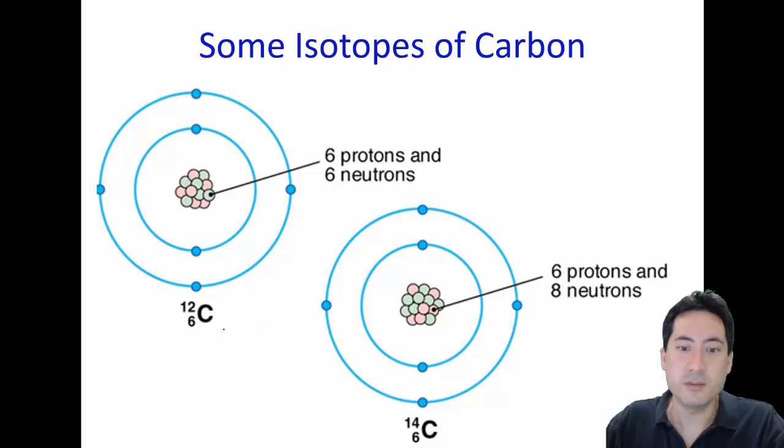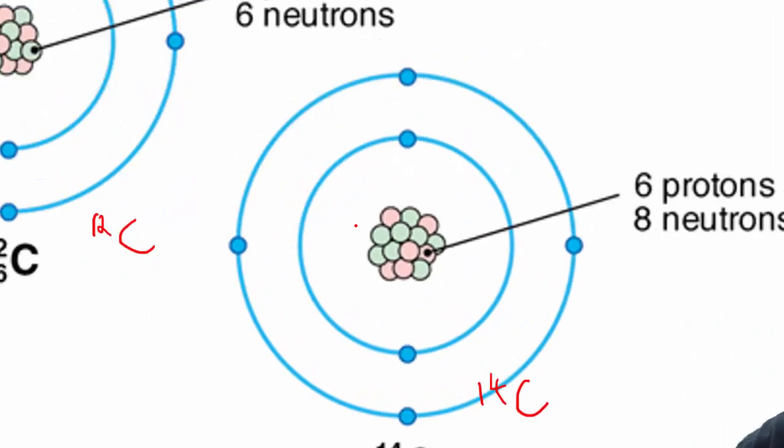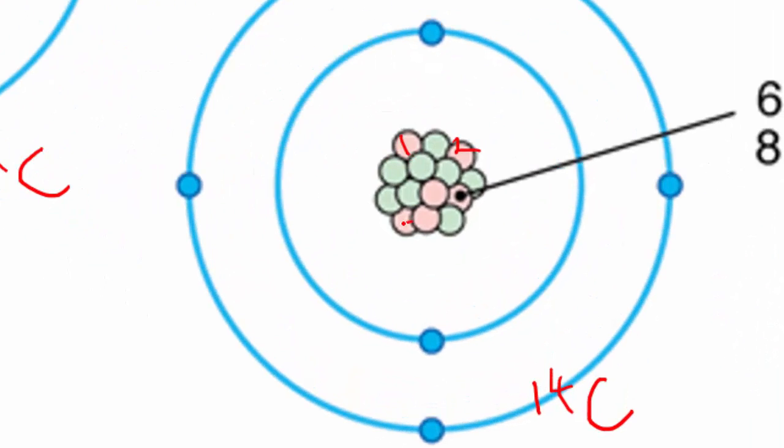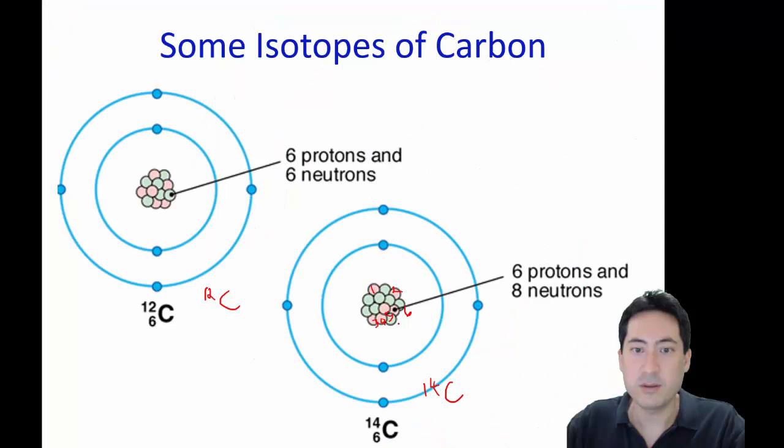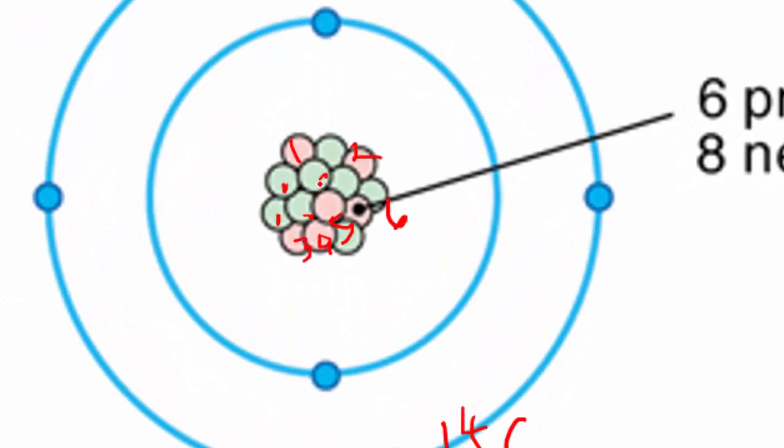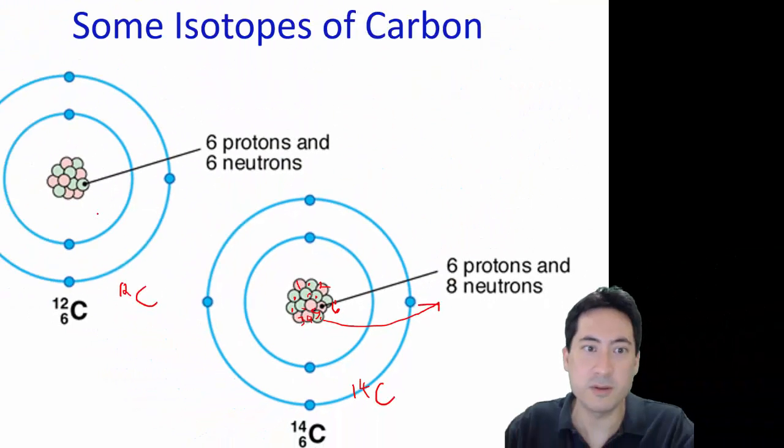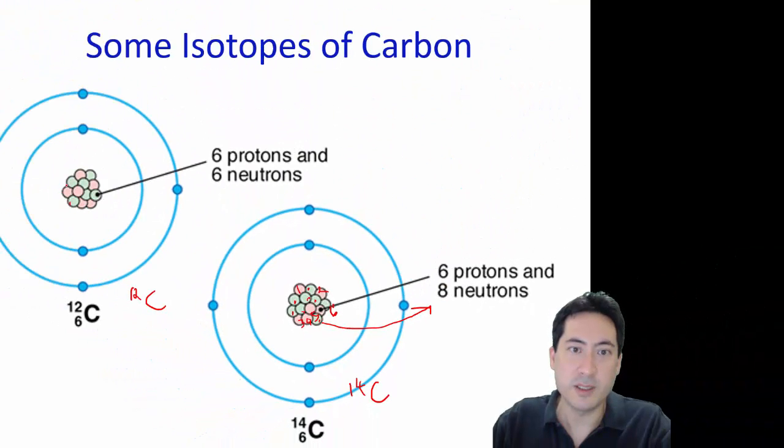Here is another example, something that's a little bit more common, carbon-12 and carbon-14. If you count up the pink ones, 1, 2, 3, 4, 5, 6, that must be the number of protons. Otherwise, it wouldn't be carbon. This is 1, 2, 3, 4, 5, 6, 7, 8. So the green ones must be the neutrons. And so there would be 6 of everything in the top one.